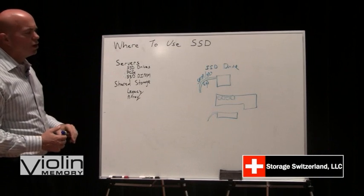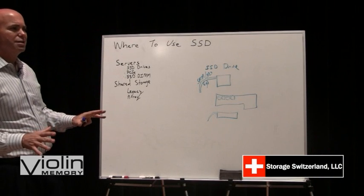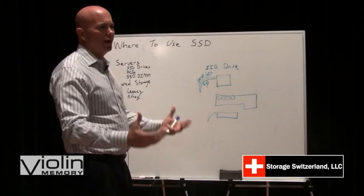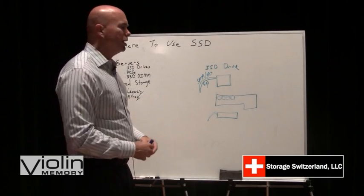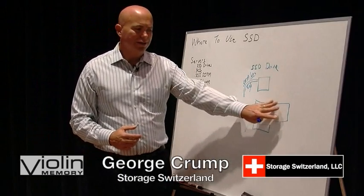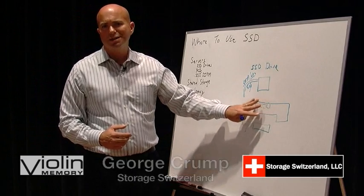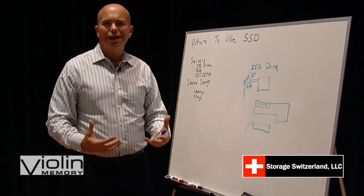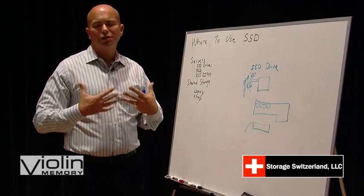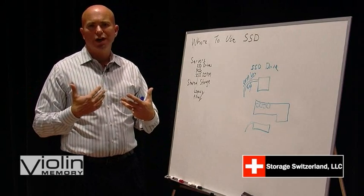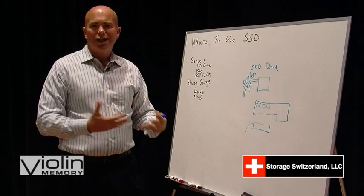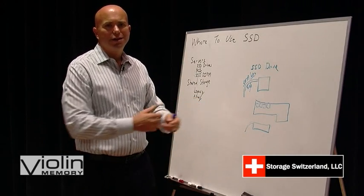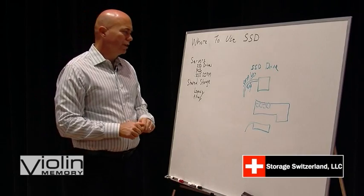The downside to all server-based SSDs is they're really designed just for a single server — you can't share them. So a big use case, especially for PCIe, is using it as a cache so that data can be pulled in locally off of a shared storage device or even off of local hard drives and cached in high-speed PCIe. That makes it very beneficial.